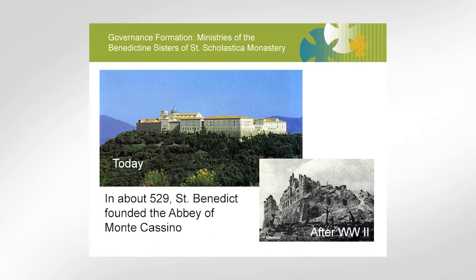In about 529, he founded the Abbey of Monte Cassino. In the upper left, you see what the Abbey looks like today. It was completely rebuilt after the war, but you can see the picture of the devastation that happened during the bombing.